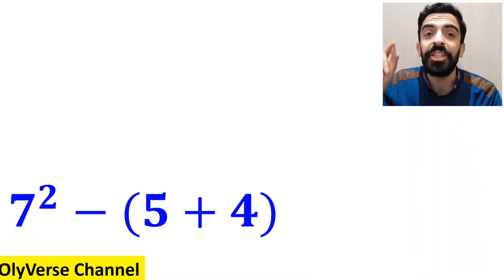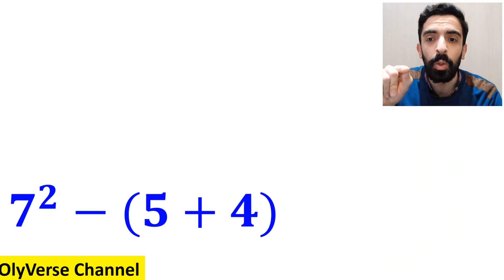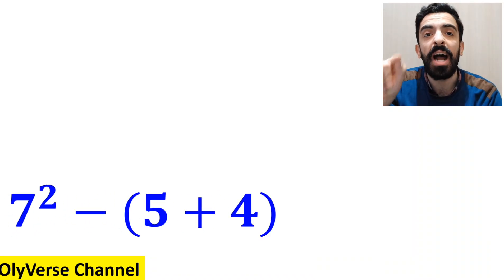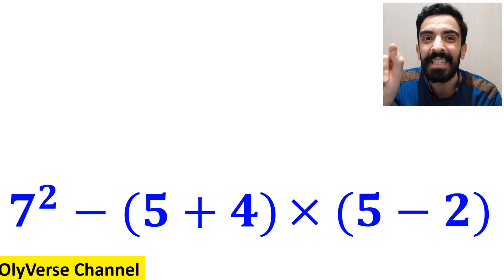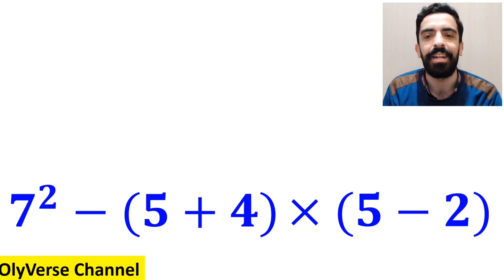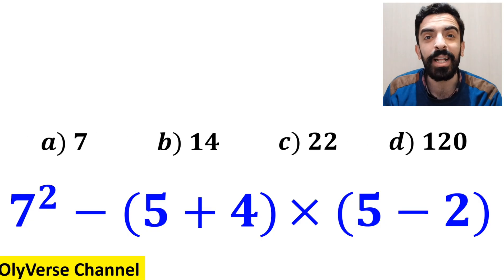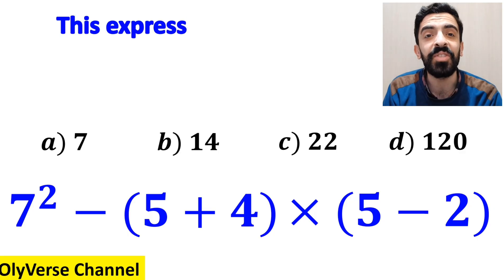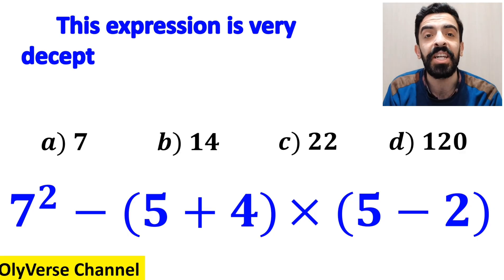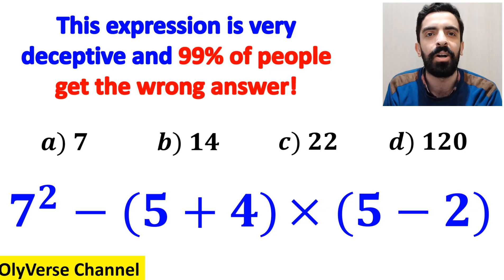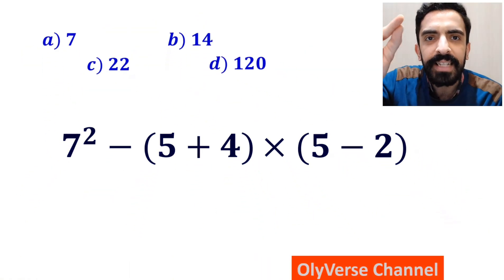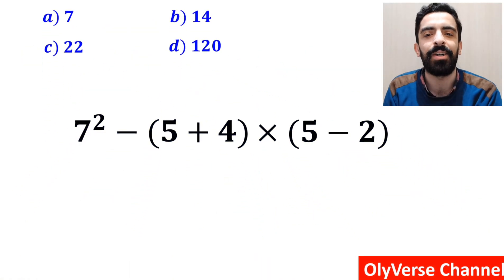What is the value of the expression 7 squared minus (5 plus 4) multiplied by (5 minus 2)? Which option do you think is the correct answer to this question? This expression is very deceptive and 99% of people get the wrong answer. Let's take a close look and solve it together.